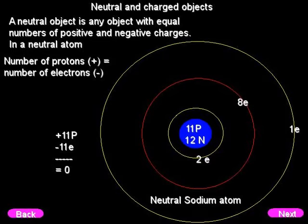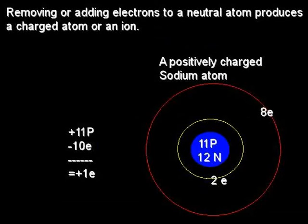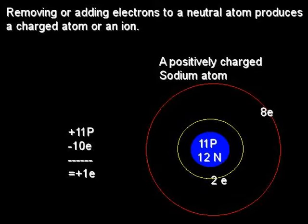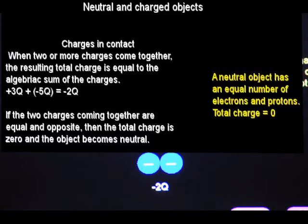Conservation of charge: the total charge within any closed system is conserved. When some negative charges are removed from a neutral object, an equal amount of positive charges are left on it. When two or more ions combine, the total charge is equal to the algebraic sum of the individual charges.